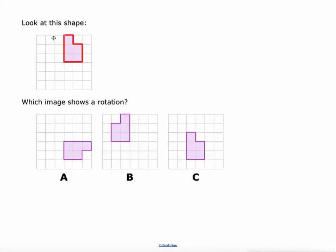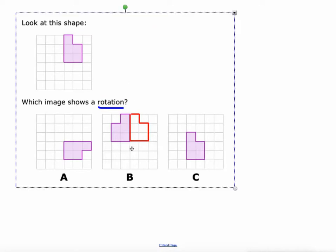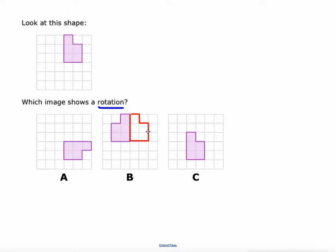Alright, so we're looking to see which of these shapes below is a rotation of the original. Which one's a rotation? Well, this one over here, C, is easy to identify. It's a translation because I can just slide it right over there. This one, B, looks like a reflection. If I reflect it over this line right here, that would match the purple shape there.